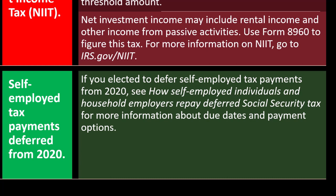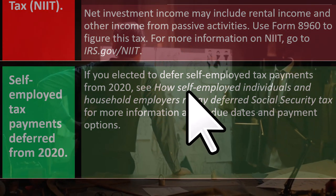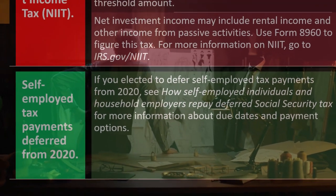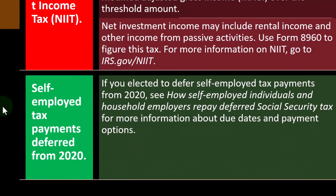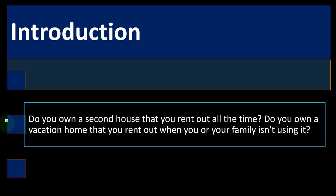One solution was deferring payroll taxes to a later date. When that kind of idea comes up, people ask about self-employed individuals too, since self-employed individuals treat themselves as both employer and employee, subject to Social Security and Medicare. They should get a similar benefit — a common theme where laws aimed at large corporations get adapted for flow-through companies, partnerships, and sole proprietors.